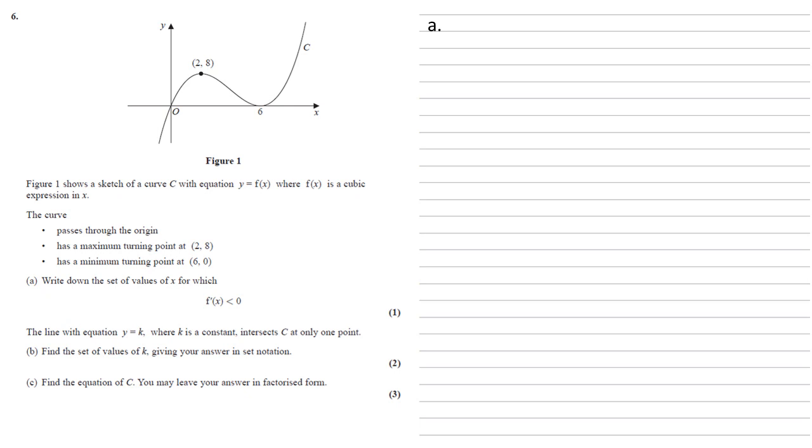Figure 1 shows a sketch of a curve C with equation y equals f(x), where f(x) is a cubic expression in x. The curve passes through the origin, has a maximum turning point at (2,8) and has a minimum turning point at (6,0).